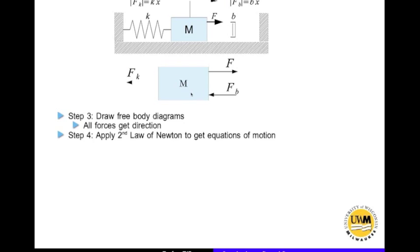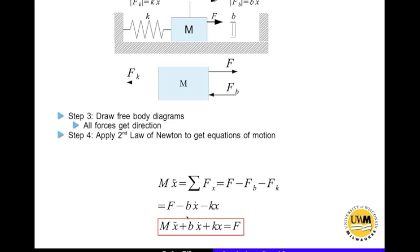Then we apply Newton's second law. m times x-double-dot equals the sum of all forces in the x direction: the applied force F is positive, while the spring force and damping force are both negative. Substituting the values gives the final equation of motion. A quick check: the coefficients of x-double-dot, x-dot, and x should all have the same sign. Here m, b, and k are all positive — if one were different, there would be an error in the equations of motion.